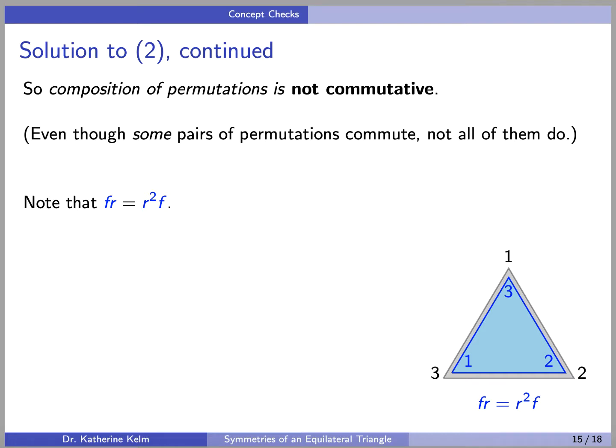For example, R commutes with itself. So certainly some permutations commute and R commutes with E. So some of the permutations do commute, but not all of them do.